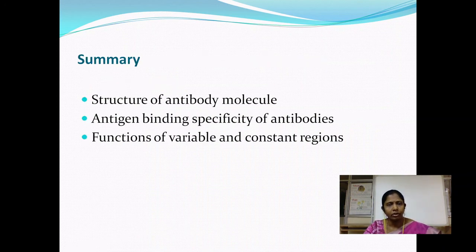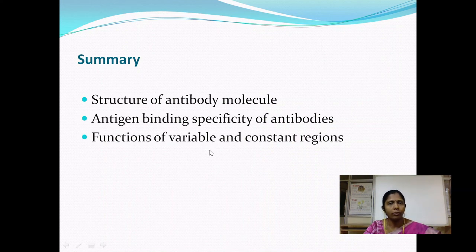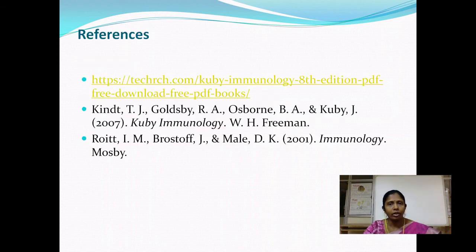To summarize: we discussed the structure of antibody molecules, how antigen binding specificity of antibodies is generated, and the functions of the variable and constant regions. The variable region of an antibody molecule is important in identifying and binding to the complementary antigen, whereas the constant region serves different effector functions like opsonization and antibody-dependent cytotoxicity. These references will help you thoroughly understand these concepts.